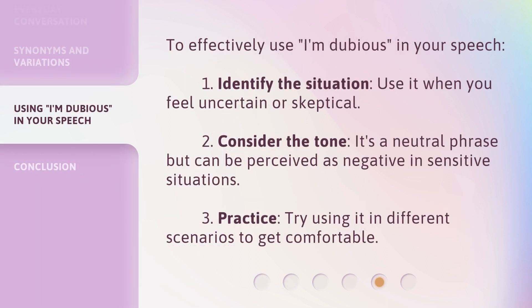To effectively use 'I'm dubious' in your speech: 1. Identify the situation — use it when you feel uncertain or skeptical. 2. Consider the tone — it's a neutral phrase but can be perceived as negative in sensitive situations. 3. Practice — try using it in different scenarios to get comfortable.